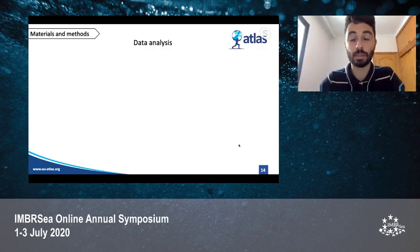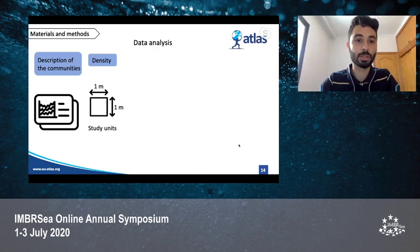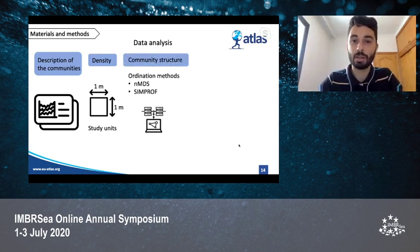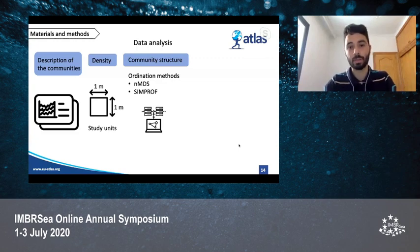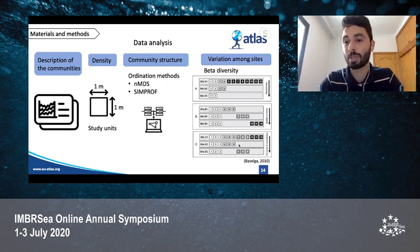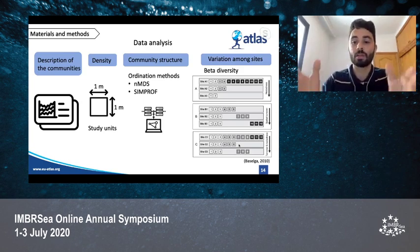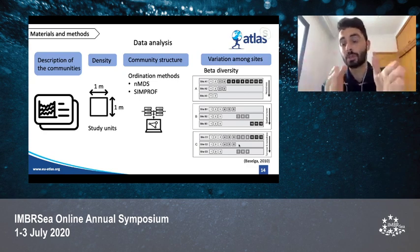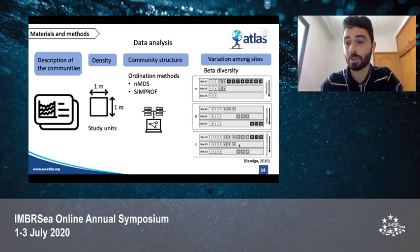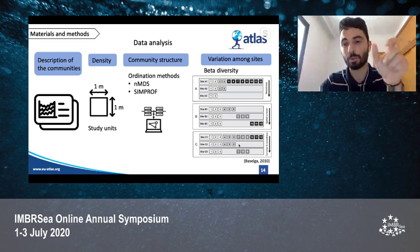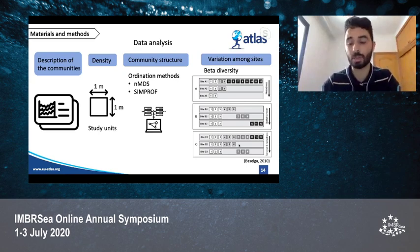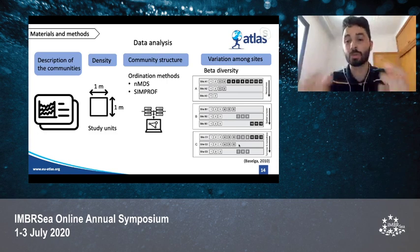For the data analysis, I did a description of the communities and calculated densities. I studied the community structure using ordination methods like non-metric multidimensional scaling (NMDS) and SIMPROF. I also studied the variation among sites using a beta diversity analysis decomposed into its two main components: nestedness, which implies that richer sites contain subsets of species found in other sites; and spatial turnover, or replacement, which implies that some species are replacing others in different sites. In nature, usually a mixture of both occurs.